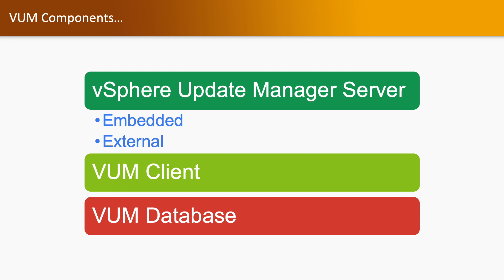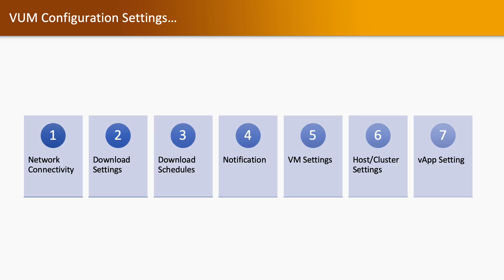VUM configuration settings: there are seven settings when performing the initial configuration of your Update Manager — network connectivity, download settings, download schedules, notifications, VM settings, host cluster settings, and VIP settings.